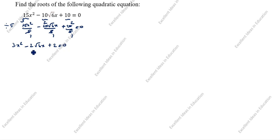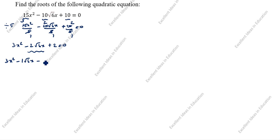Now we need to split the middle term. We have minus 2√6·x, so we split it as: 3x² minus √6·x minus √6·x. If you add those two middle terms you get minus 2√6·x, plus 2 equals 0.